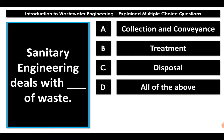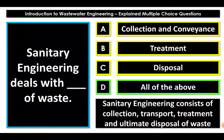Question one: sanitary engineering deals with blank of waste. The options are collection, conveyance, treatment, disposal, and all of the above. When we are talking about sanitary engineering, we are dealing with collection, conveyance (that is transportation), treatment, as well as ultimate disposal. That's why all of the options are correct. Sanitary engineering means collecting waste from the point source, transporting it, treating the waste, and finally disposing it off.